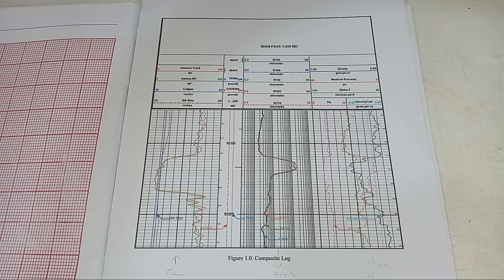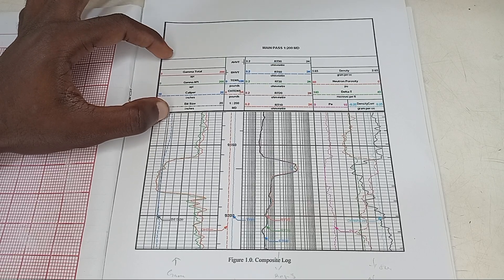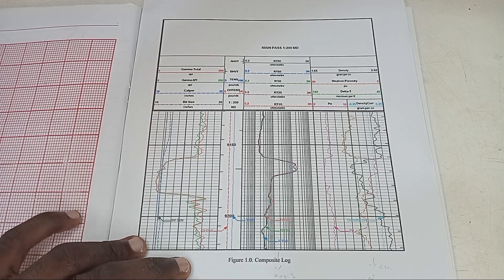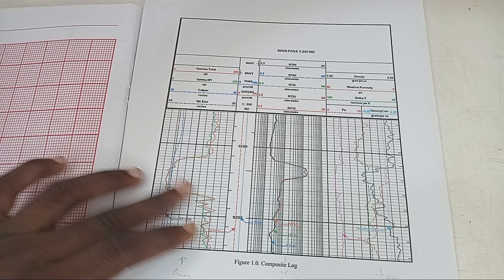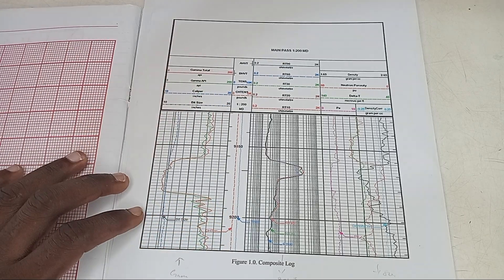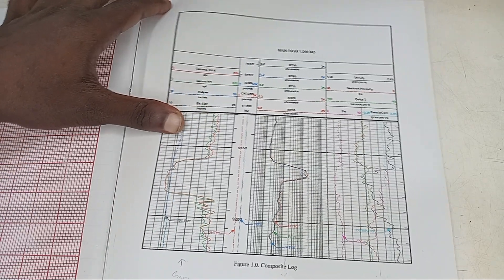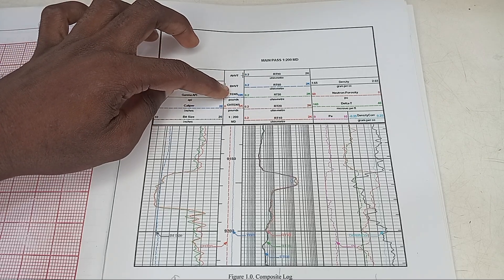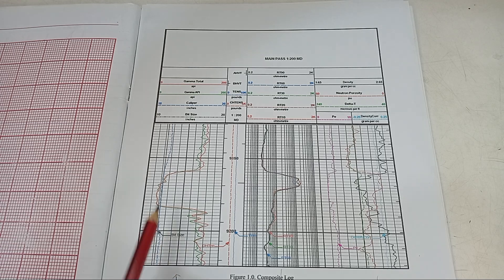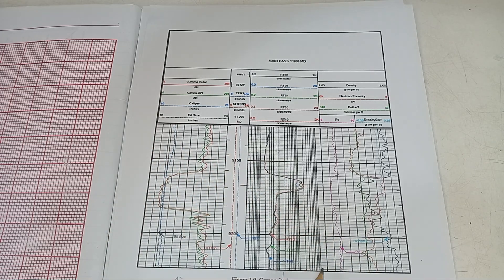The first thing we are going to do today is interpret the gamma ray log. To interpret your gamma ray log, you must know the scale it represents. You can see in the upper part — this is your gamma ray log. This tells you the title of the log and what each label means. Your concern is the gamma API — that green line — running from zero to 200 in this case. The horizontal lines represent depth, for example 9,150 feet and 9,200 feet.